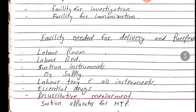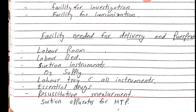Facilities needed for delivery and puerperium. Jo first referral center hai wahan delivery hoti hai. Us mein labor room — well ventilated, clean and well-lighted labor room hona chahiye. Labor bed adjustable hona chahiye. Suction machine and suction apparatus, oxygen supply ke liye cylinder available hona chahiye. Labor tray with all instruments — sterile linen, cord clamper, cord cutting scissors, sterile thread, gauze pieces, sterile pads available hone chahiye.